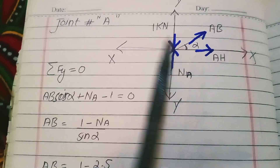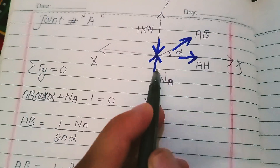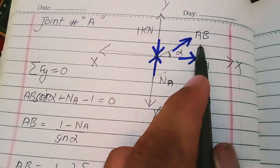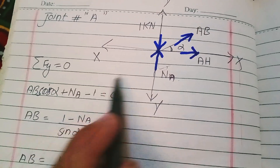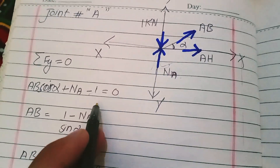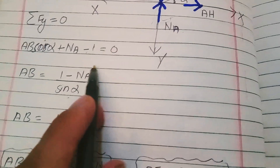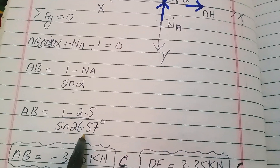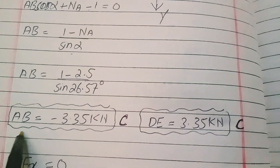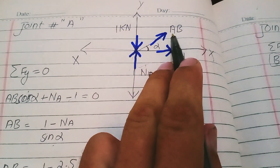Now I take joint A to find the forces in members connected to joint A. Summation of all vertical forces acting on joint A equals zero. There are three forces: Na upward, the 1 kN load downward, and the vertical component of AB. So AB sine alpha plus Na minus 1 equals zero. AB equals (1 minus Na) divided by sine alpha, which gives AB equal to (1 minus 2.5) divided by sine 26.57, so AB equals negative 3.35 kN, meaning it is in compression.